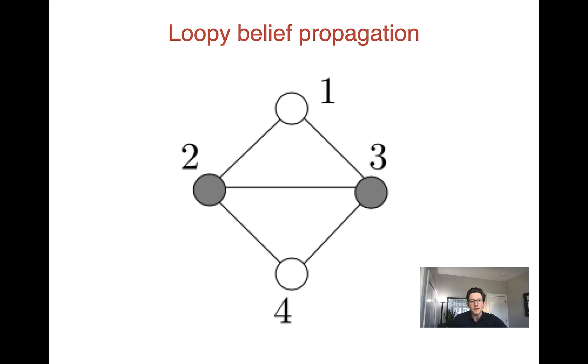So let's say we can't do exact inference. Turns out loopy belief propagation, despite those two problems, turns out to be a very effective algorithm in practice. Often it does converge, and often it converges quickly and to a very accurate solution. You can do some theory about why this would be, but empirically that turns out to be the case.